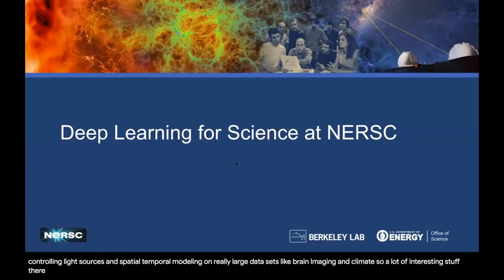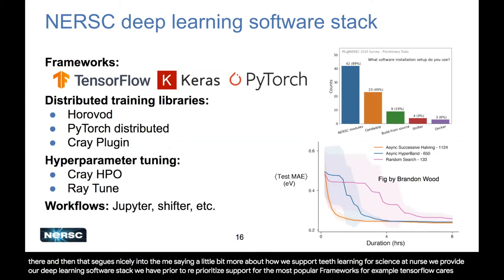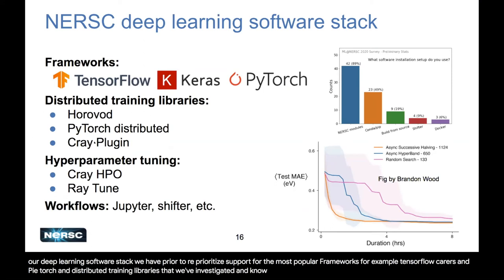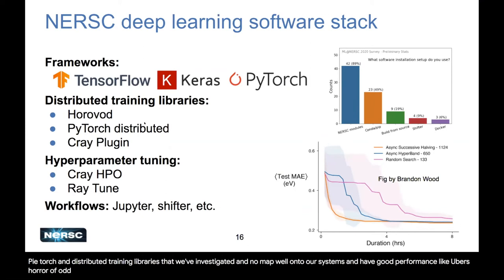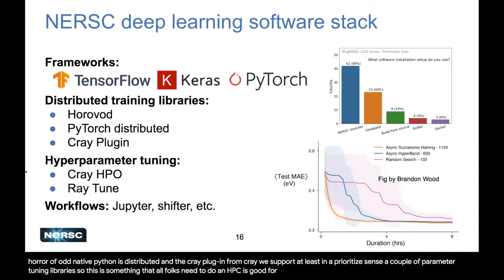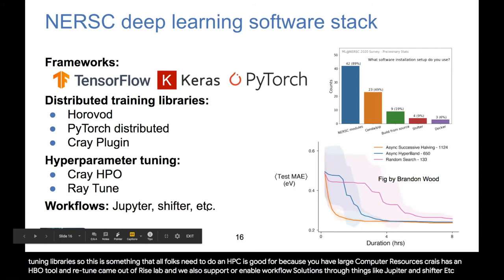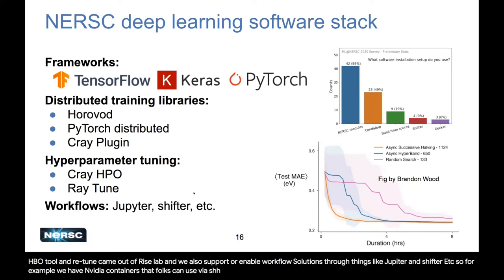We support deep learning for science at NERSC through our deep learning software stack. We prioritize support for the most popular frameworks — TensorFlow, Keras, and PyTorch — and distributed training libraries that map well onto our systems, like Uber's Horovod, native PyTorch distributed, and the Cray plugin. We support parameter tuning libraries like Cray's HPO tool and RayTune from Rise Lab, and workflow solutions through Jupyter and Shifter, including NVIDIA containers via Shifter on our GPU systems.